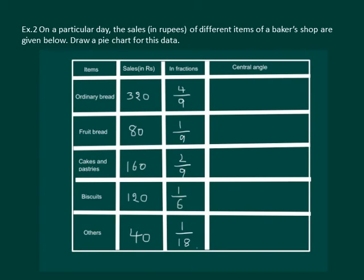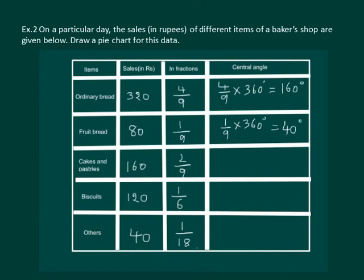We know that the complete angle of a circle is 360 degrees. Then 4 by 9th of 360 degrees will be equal to 160 degrees. 1 by 9th of 360 degrees is equal to 40 degrees. 2 by 9th of 360 degrees is equal to 80 degrees.